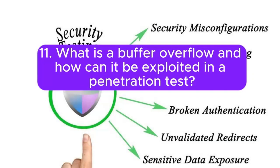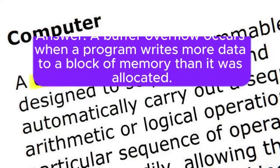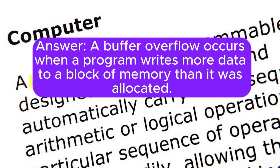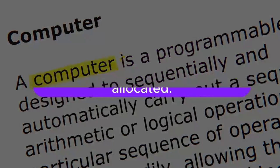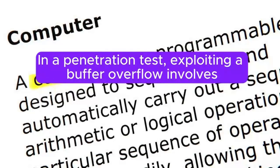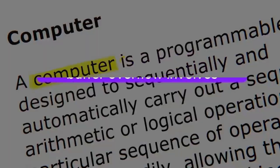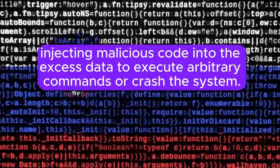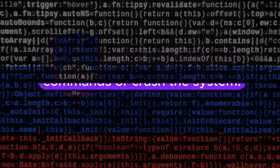Question 11: What is a buffer overflow, and how can it be exploited in a penetration test? Answer: A buffer overflow occurs when a program writes more data to a block of memory than it was allocated. In a penetration test, exploiting a buffer overflow involves injecting malicious code into the excess data to execute arbitrary commands or crash the system.